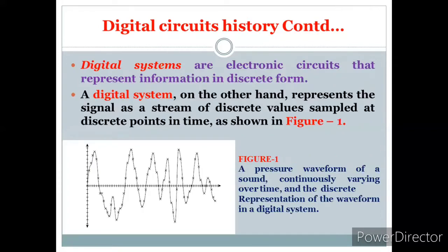Digital systems are electronic circuits that represent information in discrete form. A digital system represents a signal as a stream of discrete values sampled at discrete points in time, as shown in the figure. We can observe a pressure waveform of a sound continuously varying over time, and the discrete representation of that waveform is shown with x marks on the continuous signal — each mark sampled at a particular instant.